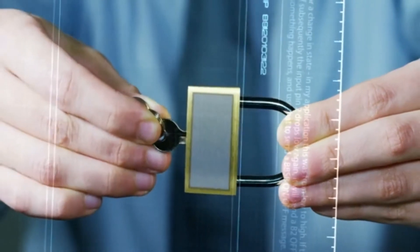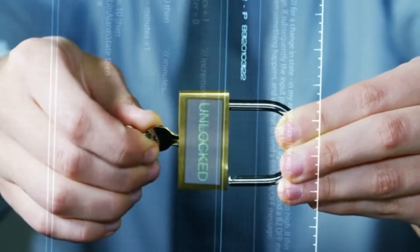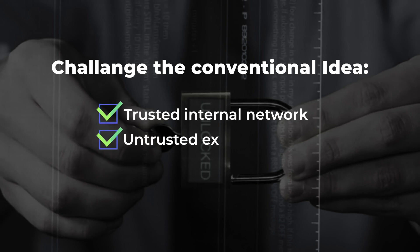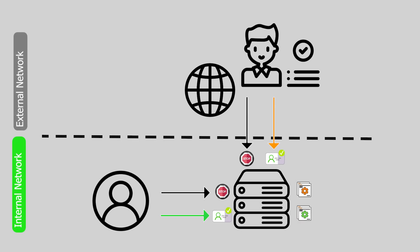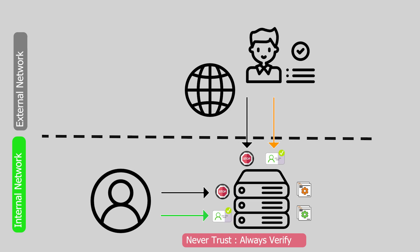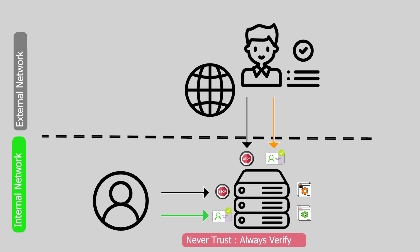A Zero Trust security model represents a whole shift in cybersecurity thinking, challenging the conventional idea of a trusted internal network and an untrusted external network. The Zero Trust model operates on the principle of "never trust, always verify." It assumes that threats can originate from both external and internal sources, which highlights the need for continuous verification of the identity and security status of all users, devices, and applications.